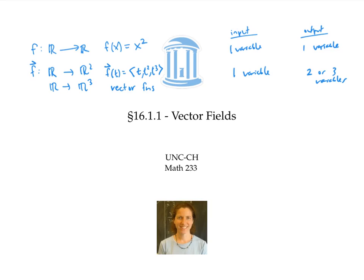Now later in the class, we started looking at functions with two or three variables as input, and one variable as output. So those would be functions that take R two to R, or R three to R, for example, something like f(x,y) equals x squared plus y squared.